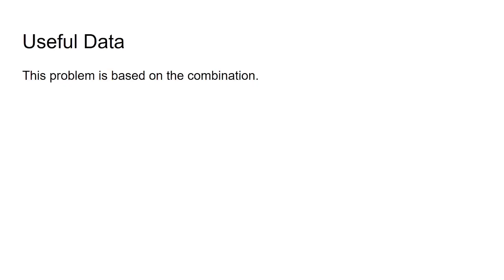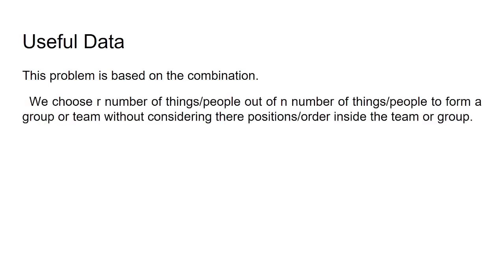Here I will briefly discuss some useful data or tricks to solve such problems based on the mathematical concepts of combination. In combination, we choose r number of things or people out of n available things or people to form a group or team without considering their positions or orders inside the team or group. This is the basic definition of combination.